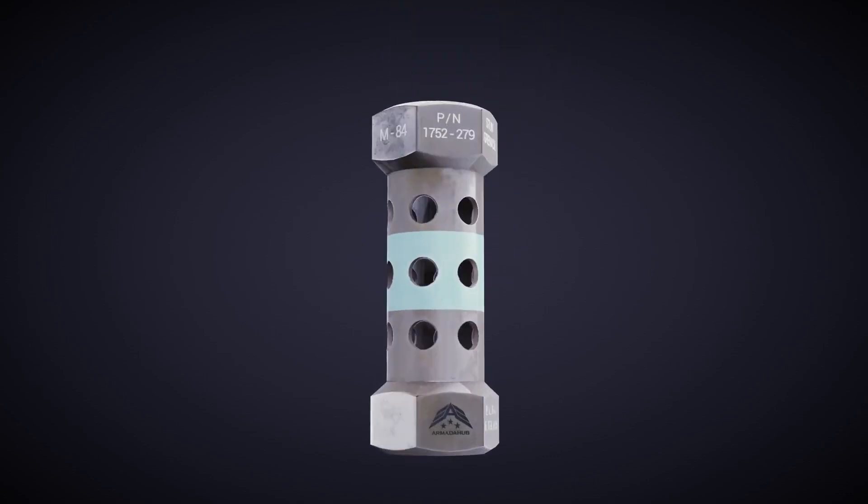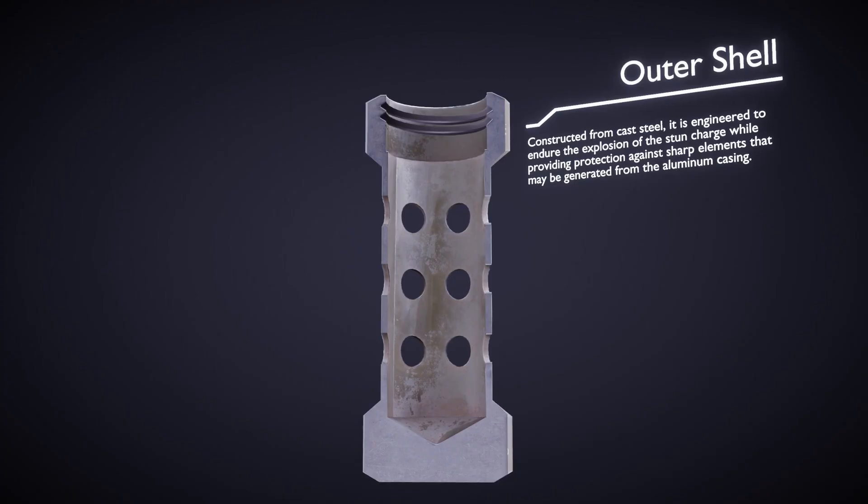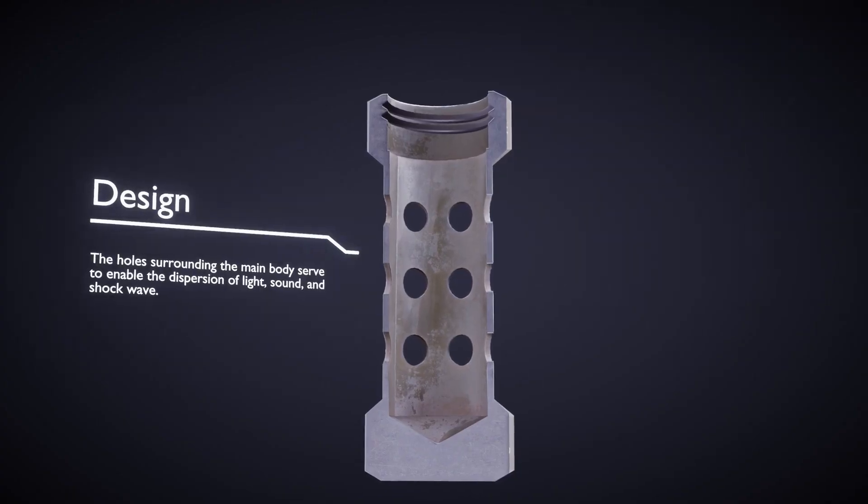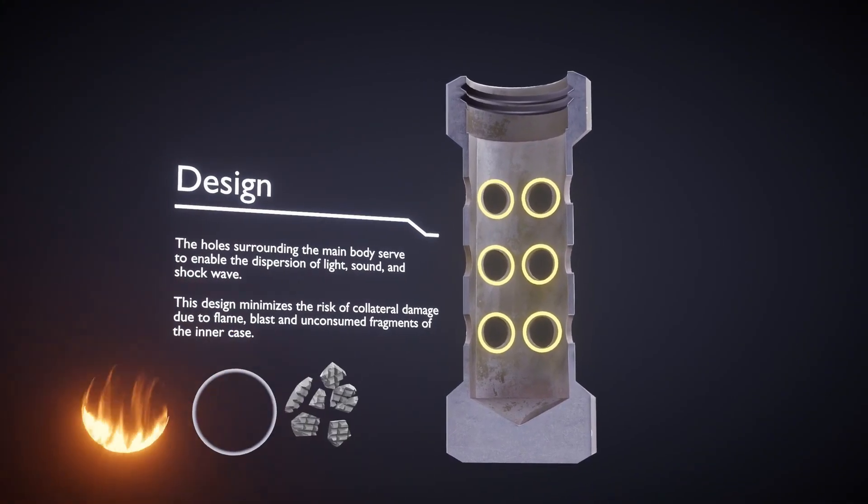Let's dive into the intricate components and workings of a stun grenade. The outer shell serves as the protective casing of the grenade, typically made of cast steel.